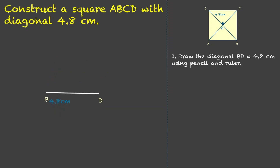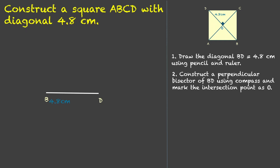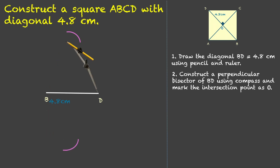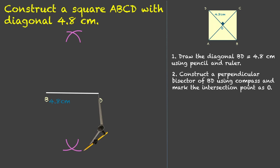Next, we do the same process: draw the perpendicular bisector of BD using compass and mark the intersection point as O. We make one arc from B — one above the line, one below the line — same goes for D, we make two arcs. We join the intersection points and this is our perpendicular bisector. The intersection point is O.